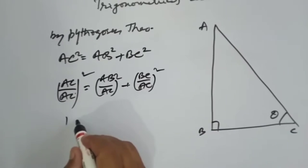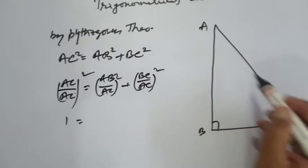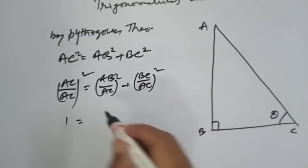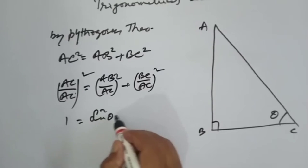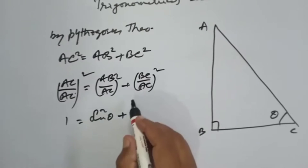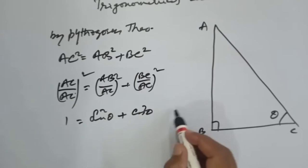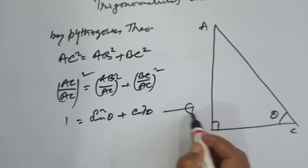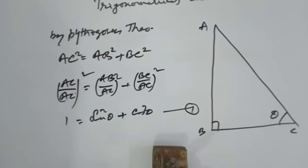Now this gives 1 is equal to AB upon AC, which is sin theta, the whole square, plus BC upon AC, which is cos theta, the whole square. Therefore we have the first identity: sin squared theta plus cos squared theta is equal to 1.